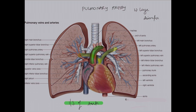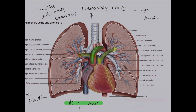Thirdly, the vessel wall is thin and distensible. Because it is thin and distensible, it has a greater compliance. Compliance means distensibility or expansibility. Because of the large compliance, the value of compliance is 7 ml per mmHg.